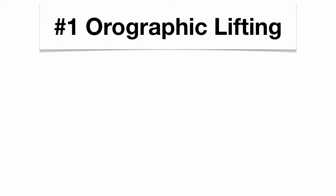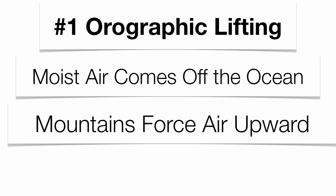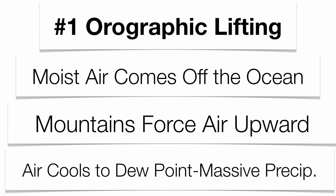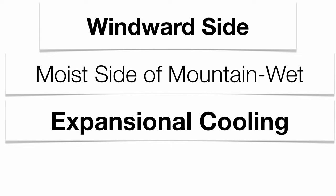Warm air rises, and there are three different ways in which it can rise. The first way is what we call orographic lifting. Sometimes warm air masses come off the ocean and come in contact with a mountain range. The easiest way for an air mass to go around a mountain range is to go up and over it. Because it's cooler in the upper atmosphere, the air mass is going to condense at the dew point, and that's where you get massive precipitation. The side of the mountain that gets precipitation is called the windward side — the wet side — caused by expansional cooling in the upper atmosphere.